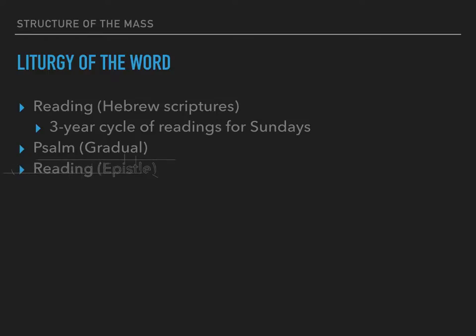After the psalm, we have a second reading, usually taken from the letters — or what we call the epistles. These are mainly letters that Paul wrote to different churches in the early Church, like Corinthians, Galatians, or Romans. This is a new aspect added after the Second Vatican Council. Before Vatican II, in the old rite, there was only one reading. Now we have two: one from the Hebrew Scriptures and the epistle. This is a new development.